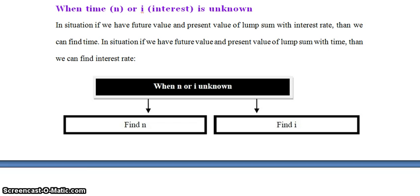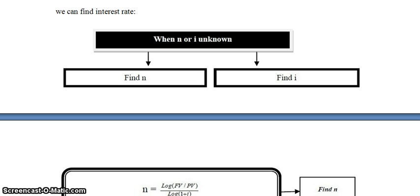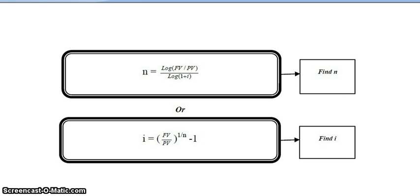In a situation where we have a future value and present value of a lump sum with an interest rate, we can find time (n). If we have a future value and present value with time, we can find interest rate (i). To find n: n = log(FV / PV) / log(1 + i). To find i: i = (FV / PV)^(1/n) − 1.